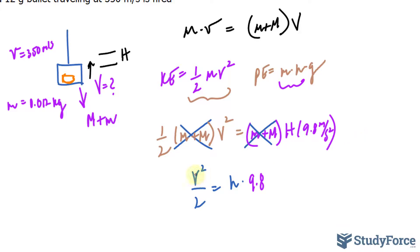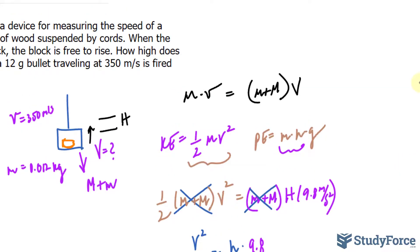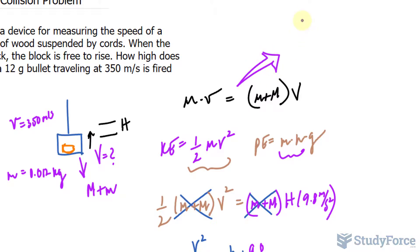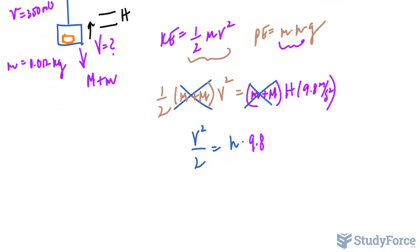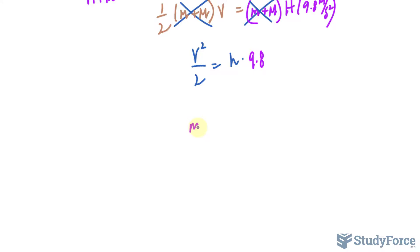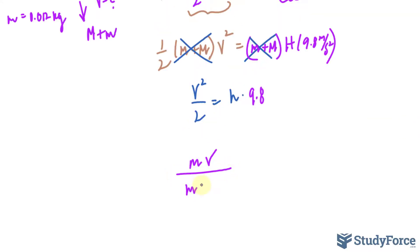Now, we obviously need to know what capital V is equal to in order for us to find out what H is. Capital V can be found by isolating it from here, where if I divide both sides by m plus M, I get little m times little v over m plus big M is equal to capital V. I'll take this expression and substitute it right into there. So we have mv over m plus big M, raised to the power of 2, over 2. And of course, we want to find out what H is, that's capital H, so we divide both sides by 9.8 and that will eventually bring it down here.